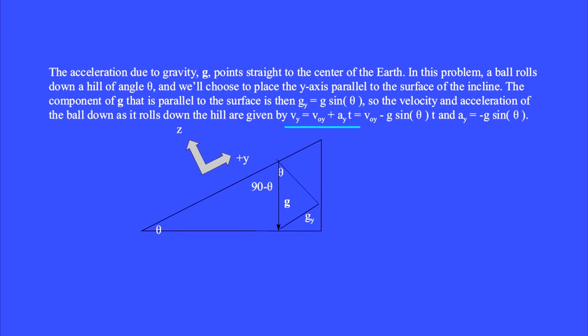So the velocity and acceleration of the pinball as it rolls down the hill are given by v_y equals v_y0 plus a_y t equals v_y0 minus g sin(θ) multiplied by t. The y component of acceleration is g sin(θ). And it gets a minus sign because this component points in our minus y direction.